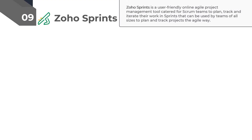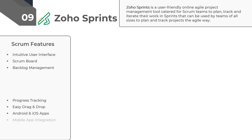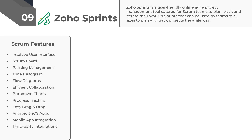Zoho Sprints is a user-friendly online Agile project management tool catered for Scrum teams to plan, track, and iterate their work in sprints. It is used by teams of all sizes to plan and track projects the Agile way. It is suitable for anyone who wants to work in iterative cycles, particularly software development teams. The main features of Zoho Sprints are its easy drag and drop controls, automated billing, and customizable project status. Zoho Sprints allows you to track your progress in real time with detailed charts and reports that include velocity, burndown and burn-up charts, cumulative flow diagram, epic progress, and timesheet report.